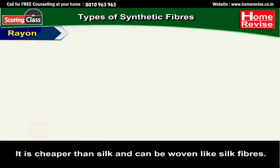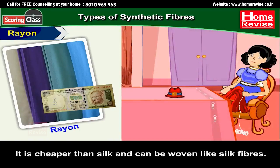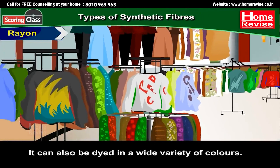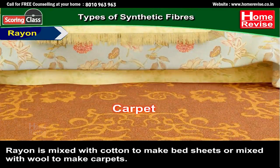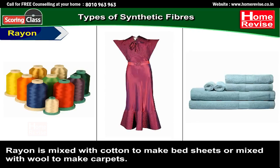Rayon is cheaper than silk and can be woven like silk fibres. It can also be dyed in a wide variety of colours. Rayon is mixed with cotton to make bedsheets or also mixed with wool to make carpet.